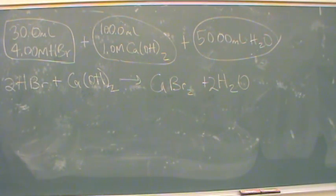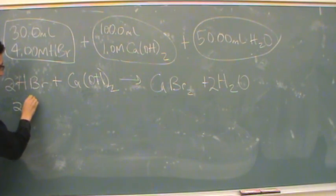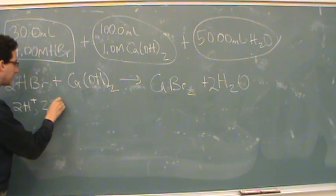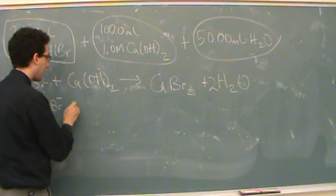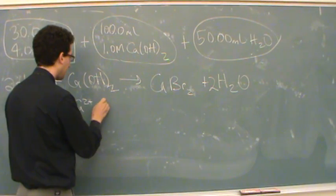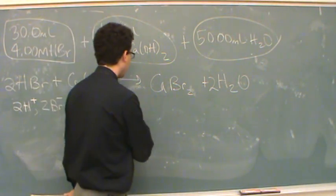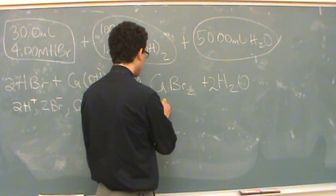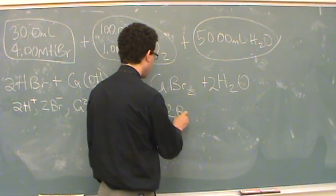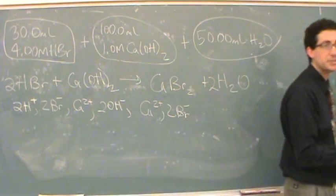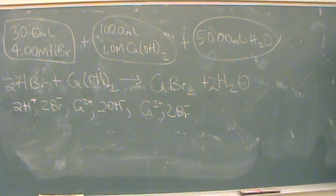So I really have two H pluses, two Br's, a calcium, and two hydroxides. And over here, I have calcium two plus and two bromides minus. And then water is not an ion, so I won't write that one down.